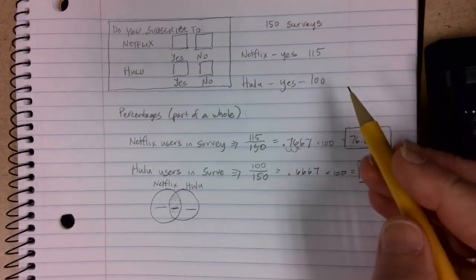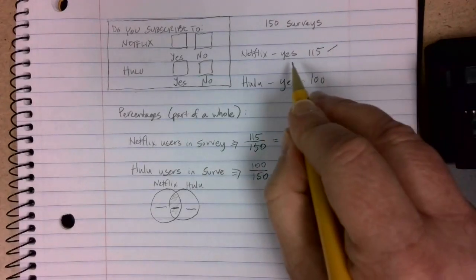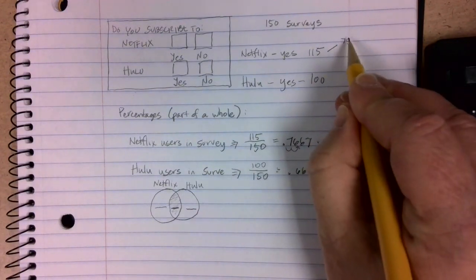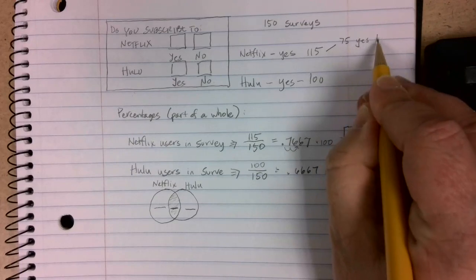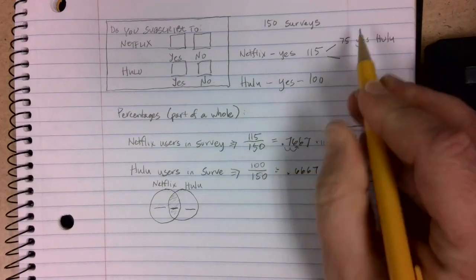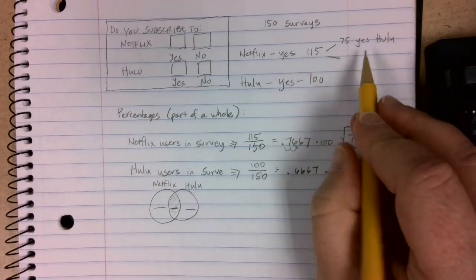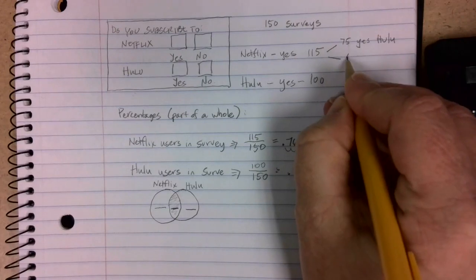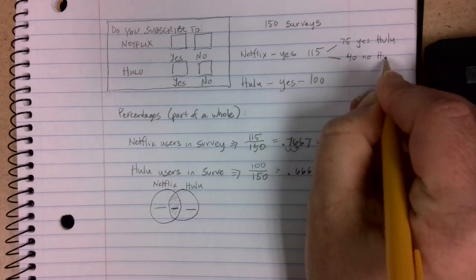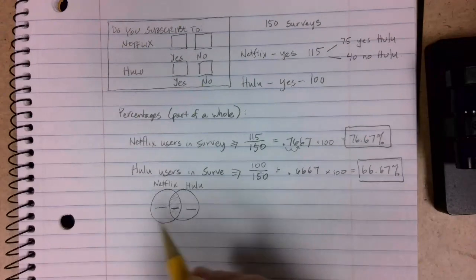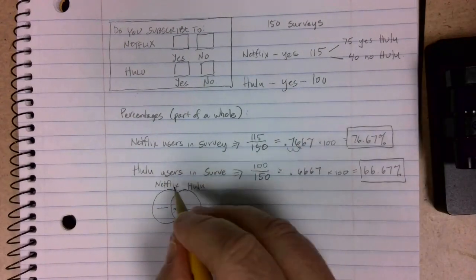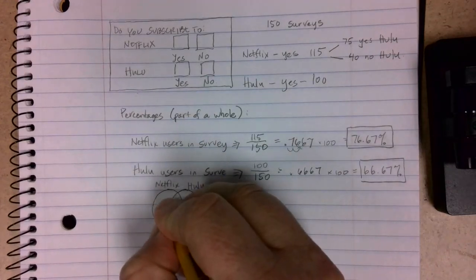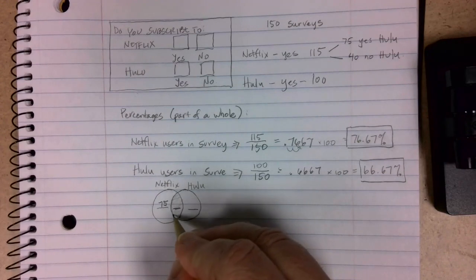So I need to deep dive a little bit more here. If I look at the places where Netflix users checked yes, in these cases, there were 75 that checked yes to Hulu. The others did not check the Hulu box, so it was no to Hulu. In this case, 115 minus 75 gives me 40 people that said no to Hulu.